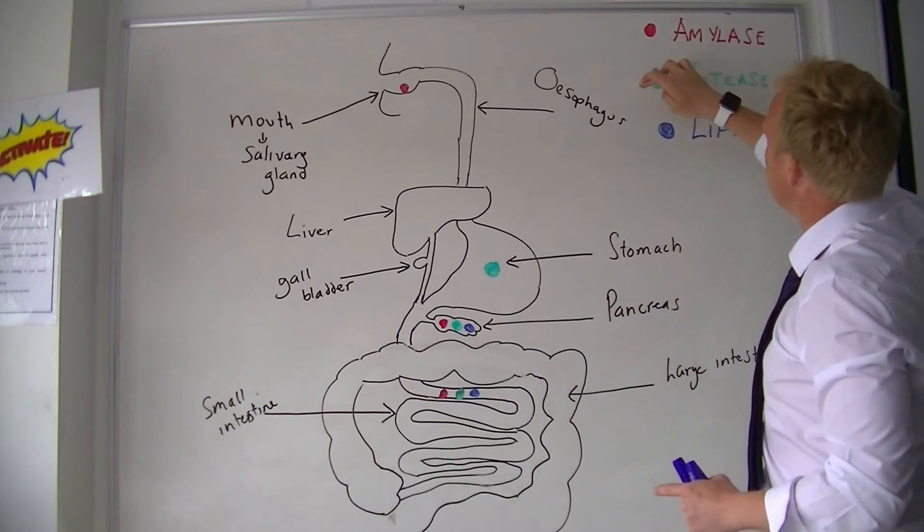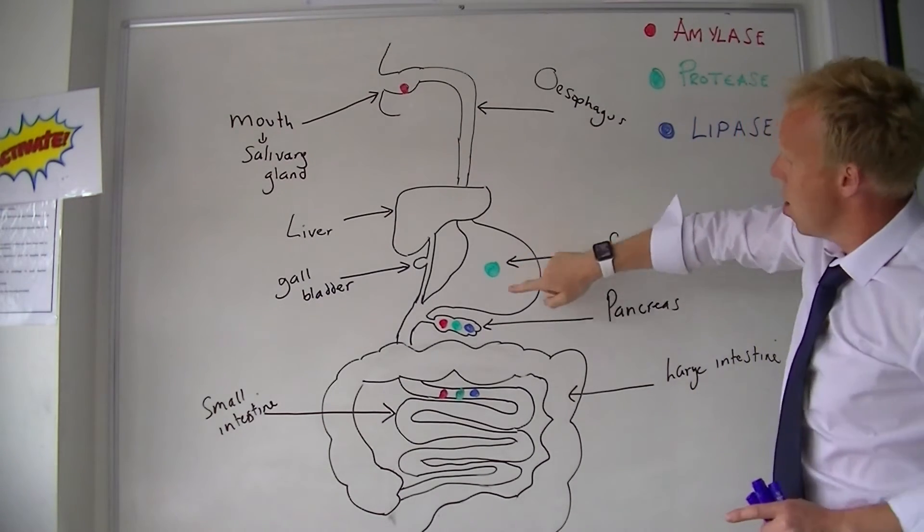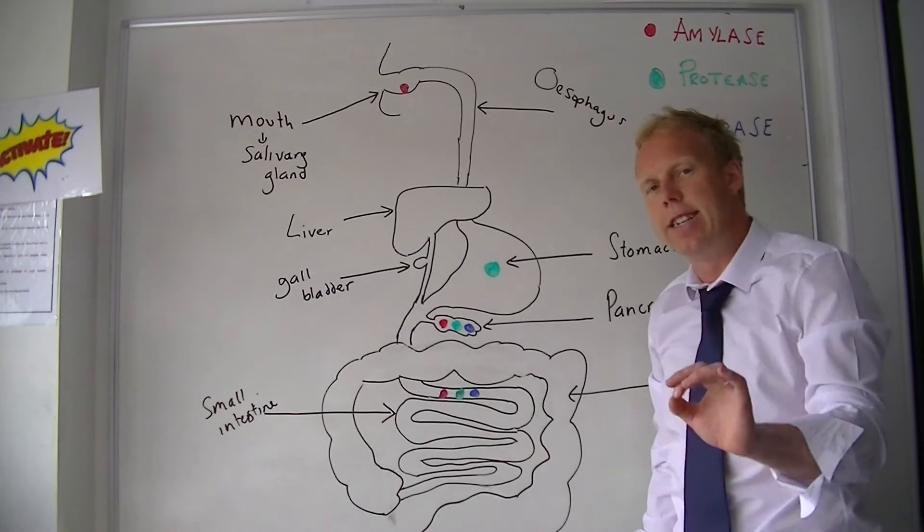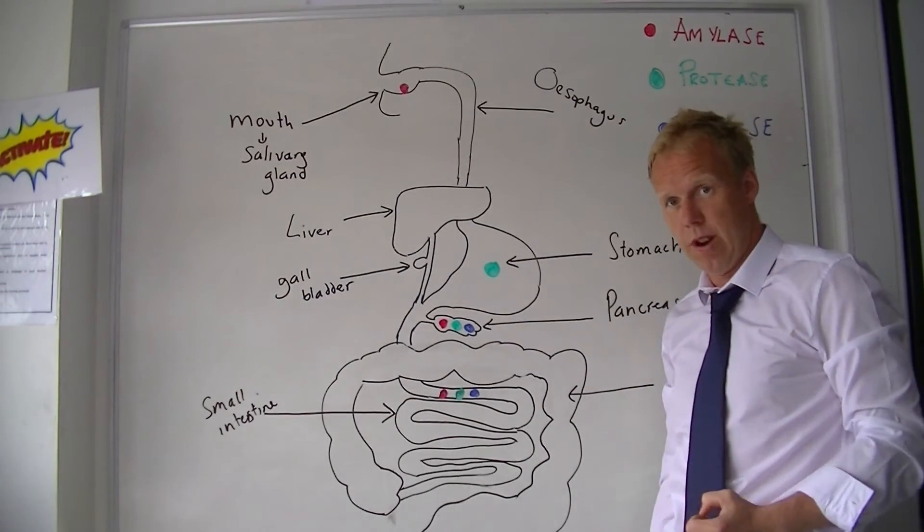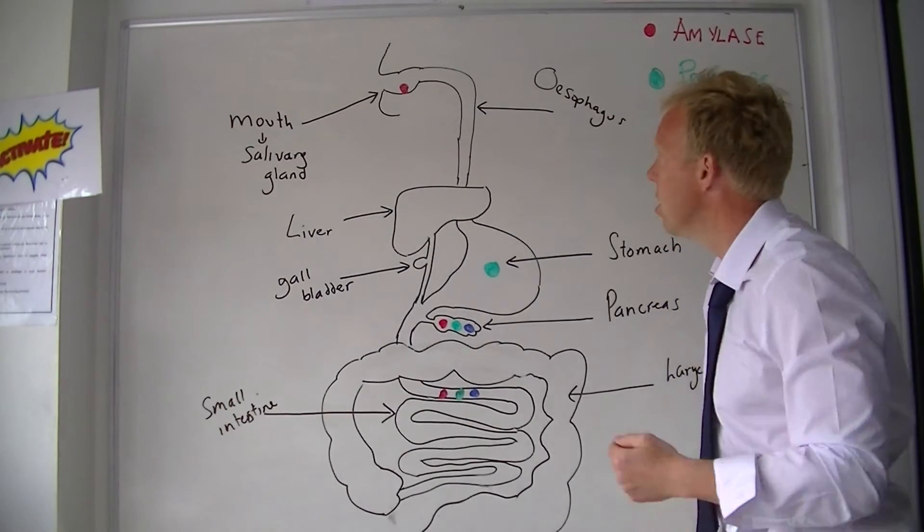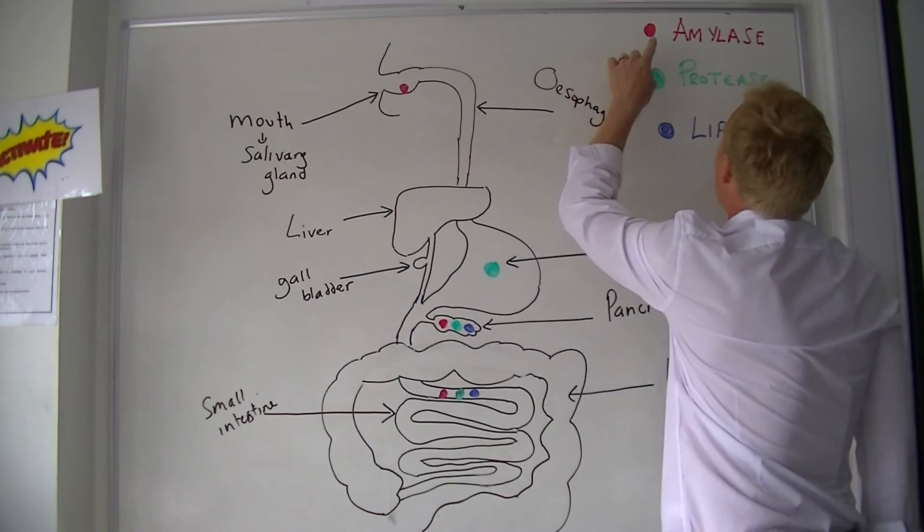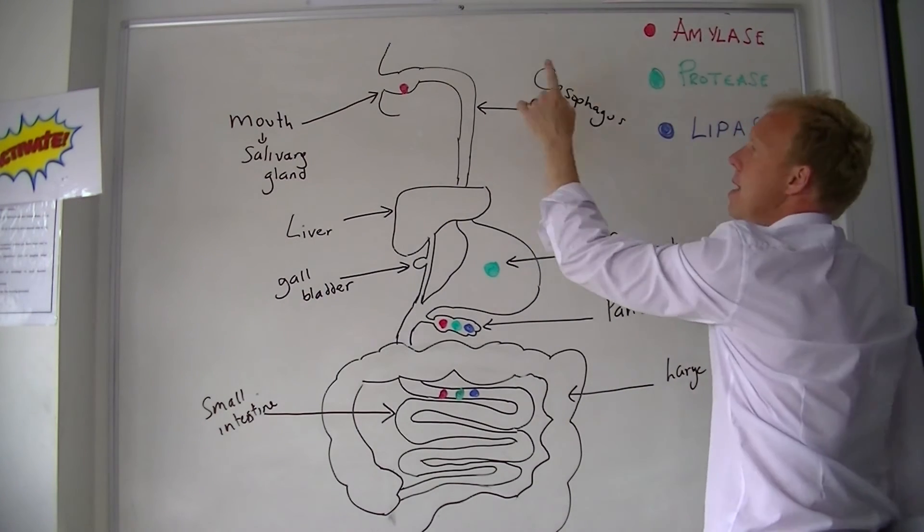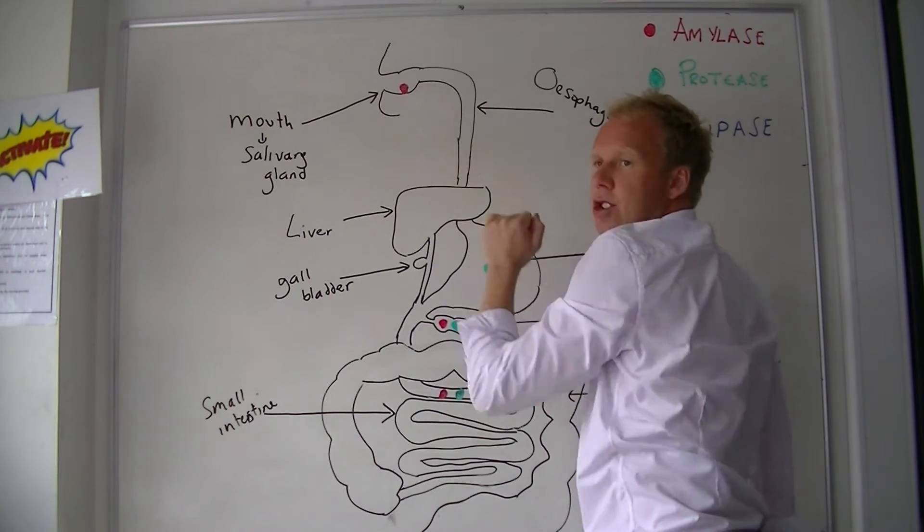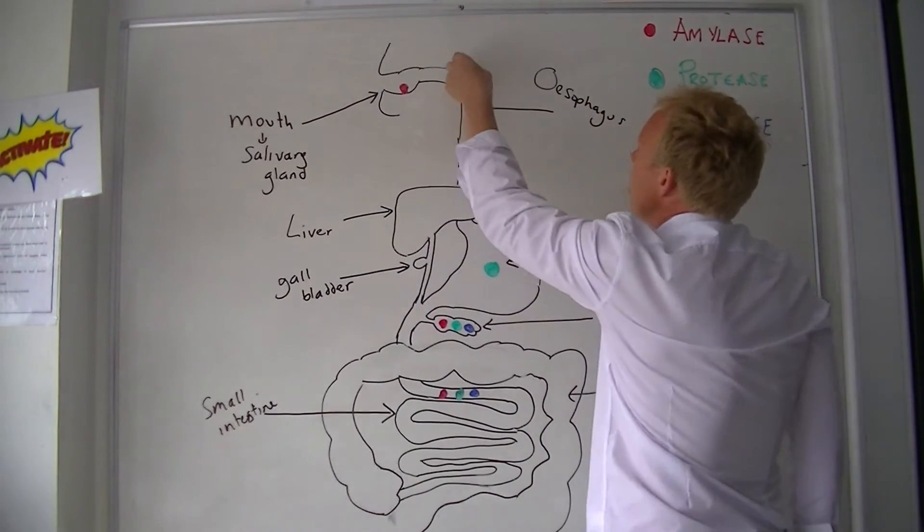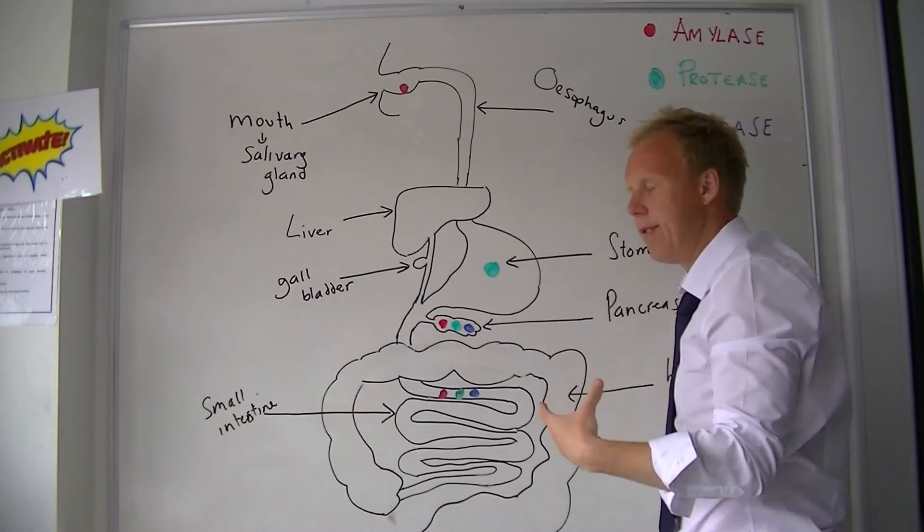I have given each one a color, and on the diagram I have tried to represent where you find each enzyme, where it's produced and where it does its role. This is a classic exam question. In the mouth, you only find amylase. Amylase is made by the salivary gland and it begins to break down the carbohydrates. There are no enzymes in the oesophagus. There is just a squeezing motion which breaks down the food.